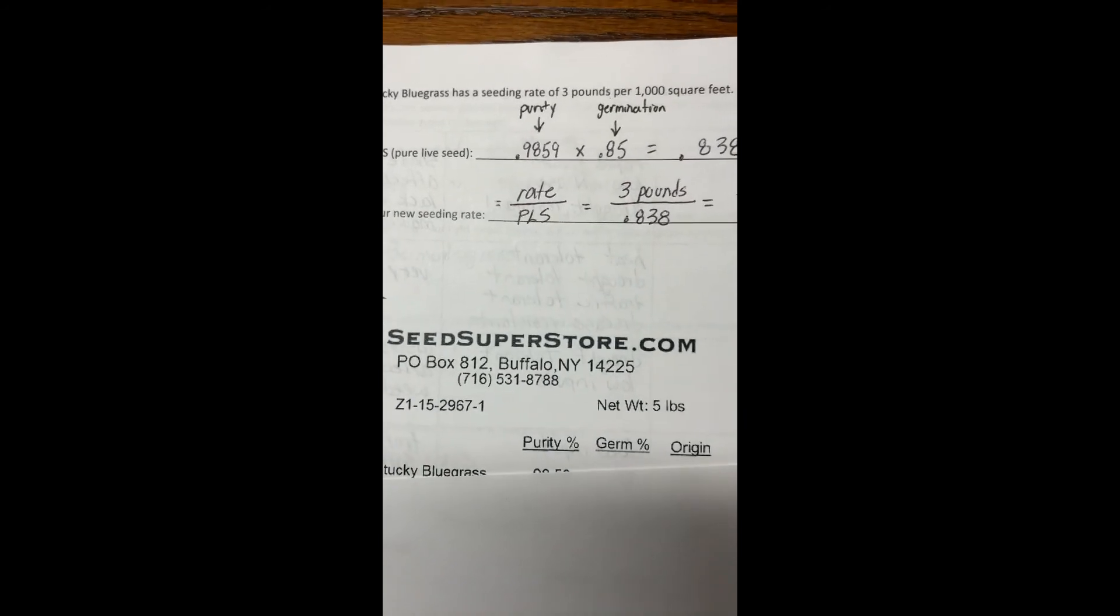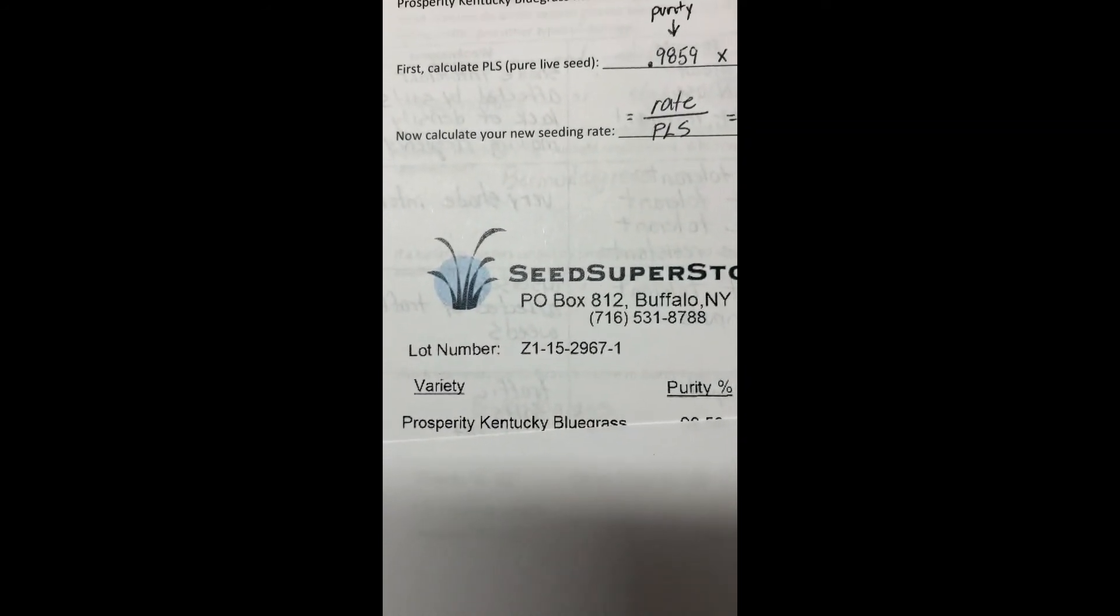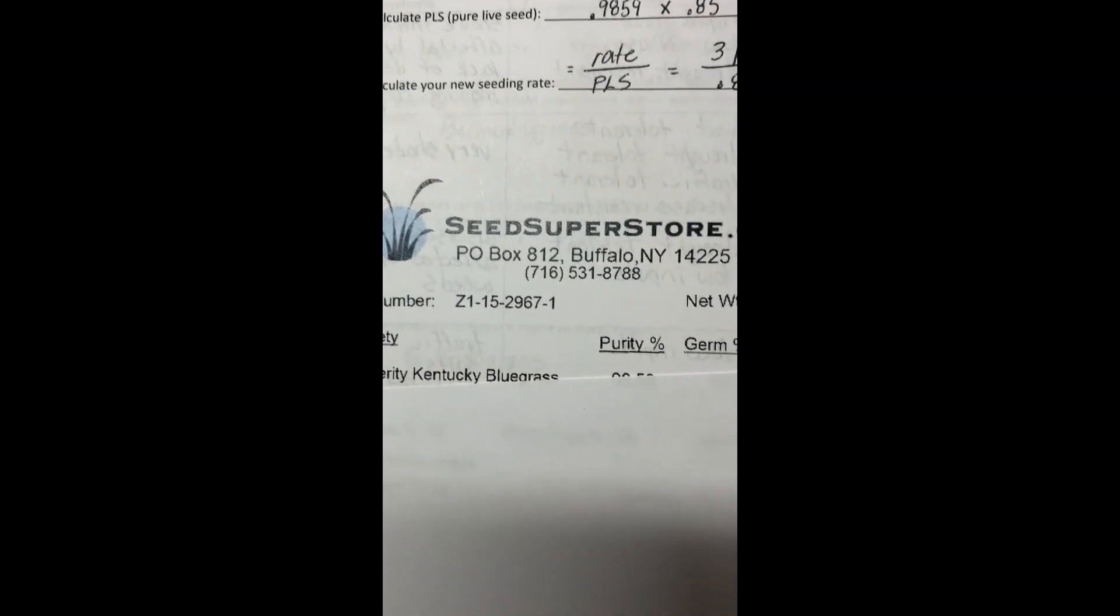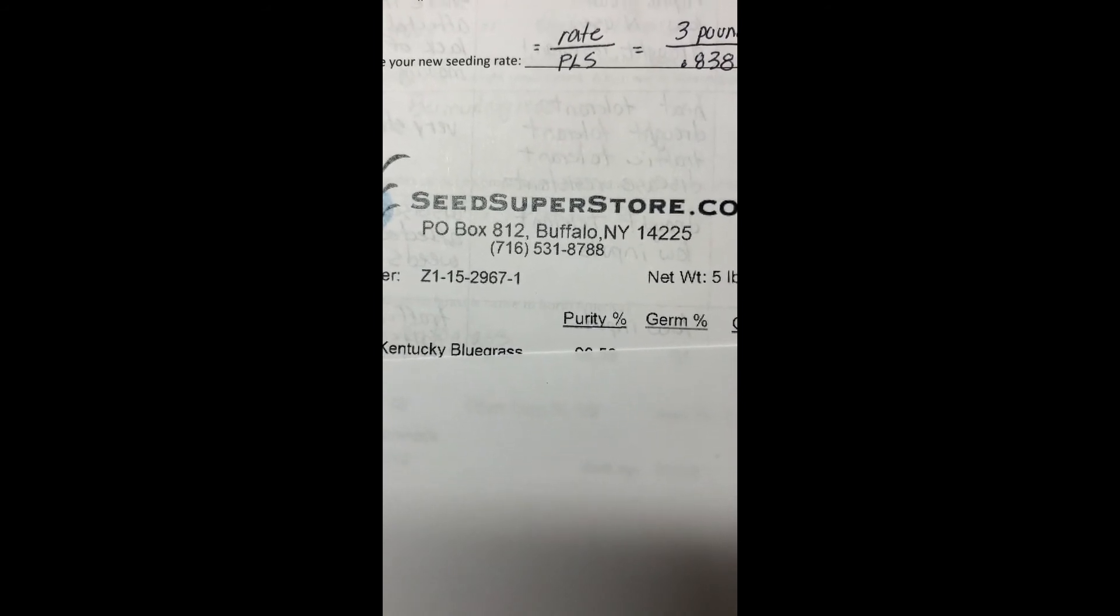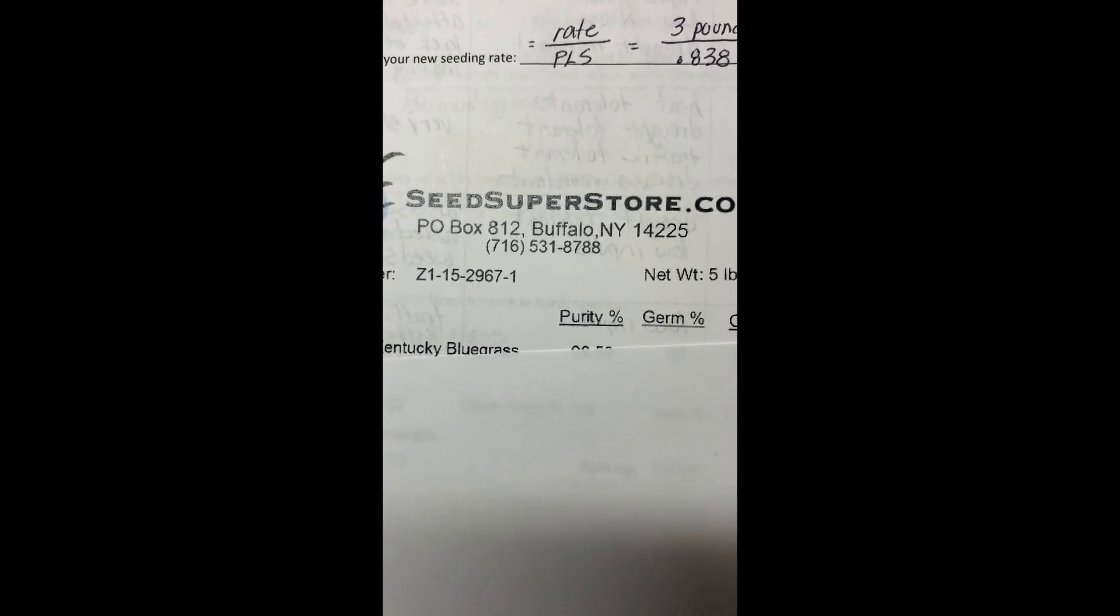So this is how we adjust our seeding rate. You're going to calculate a new seeding rate and that new seeding rate is going to be the original rate divided by the pure live seed.